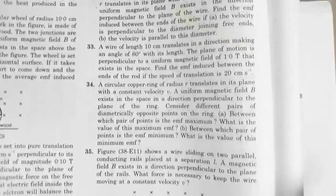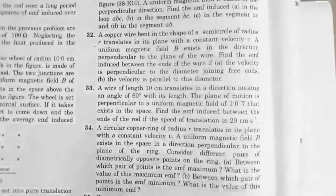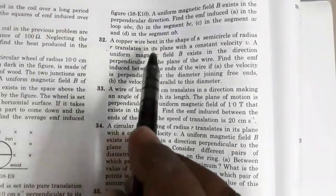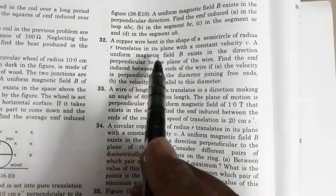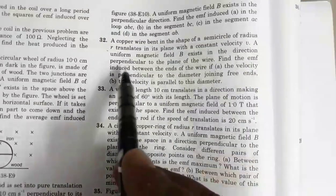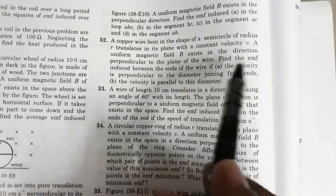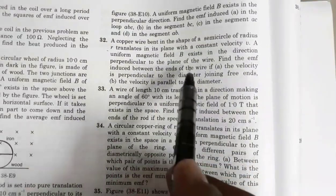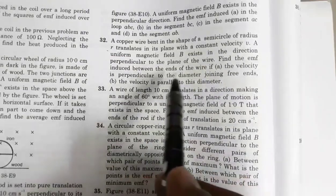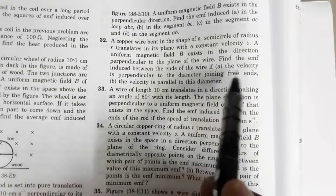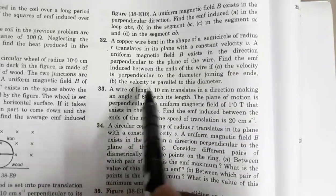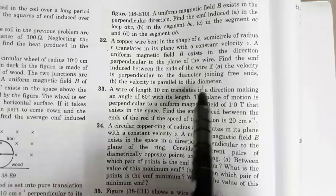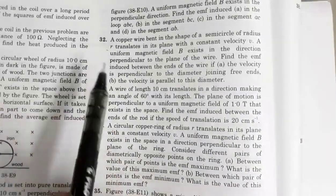So let us apply this concept in solving one question from Concept of Physics — electromagnetic induction question number 32. A copper wire bent in the shape of a semi-circle of radius R translates in its plane with a constant velocity V. A uniform magnetic field B exists in the direction perpendicular to the plane of the wire. Find the EMF induced between the ends of the wire if: (A) the velocity is perpendicular to the diameter joining the free ends, and (B) the velocity is parallel to this diameter.